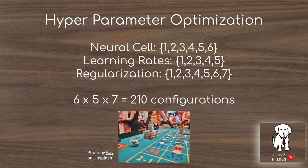Hyperparameter optimization can be defined as a discrete search space of the units that make up deep neural network architectures. In this example, there could be six different categories of a neural cell, five different learning rates, and seven different regularizations. Altogether, this would make for 210 configurations.